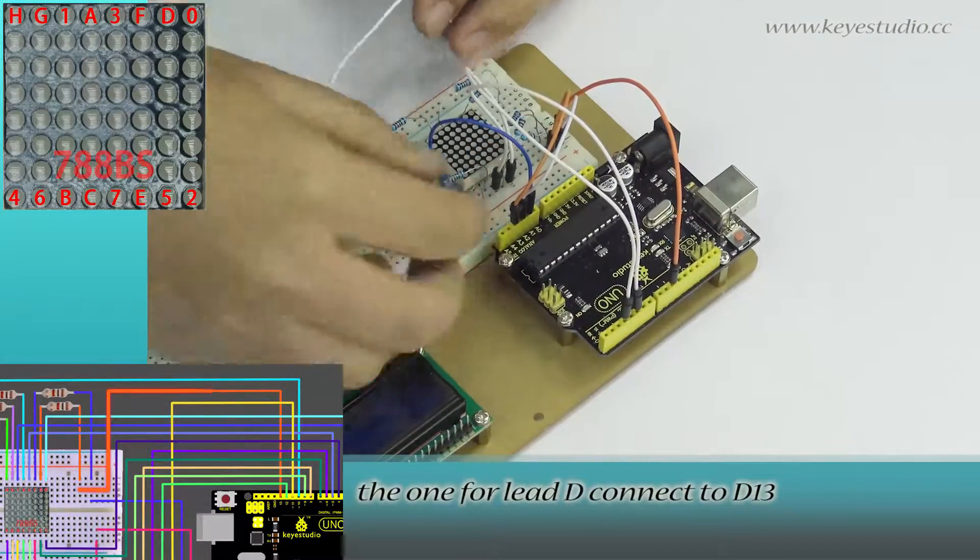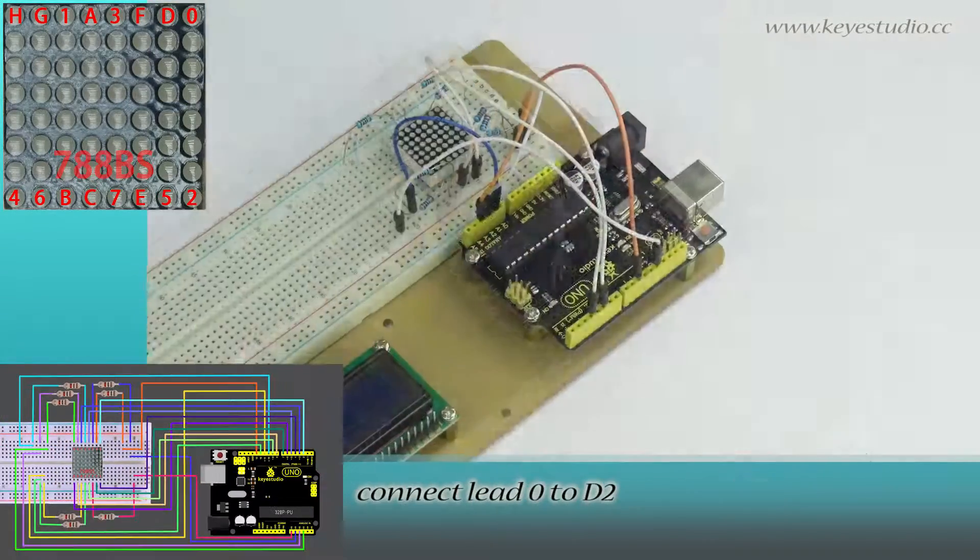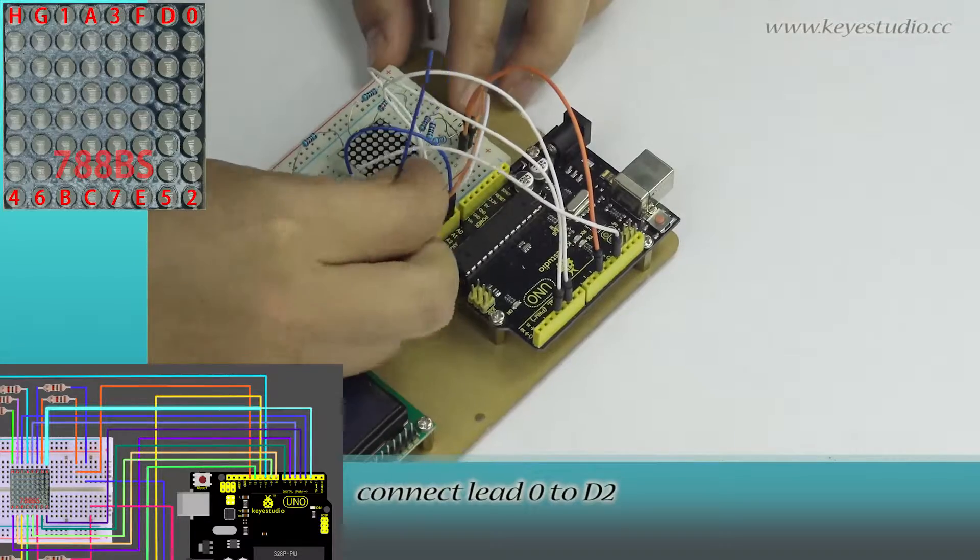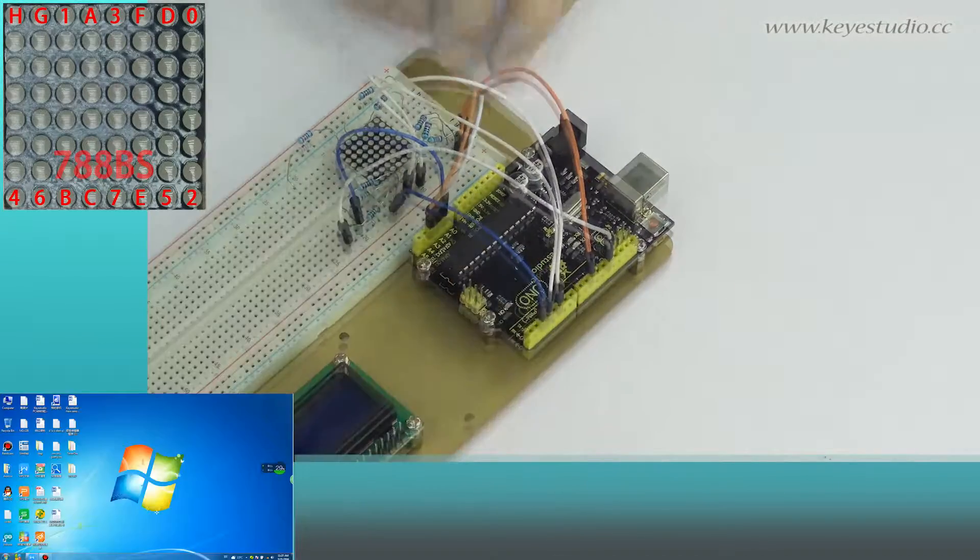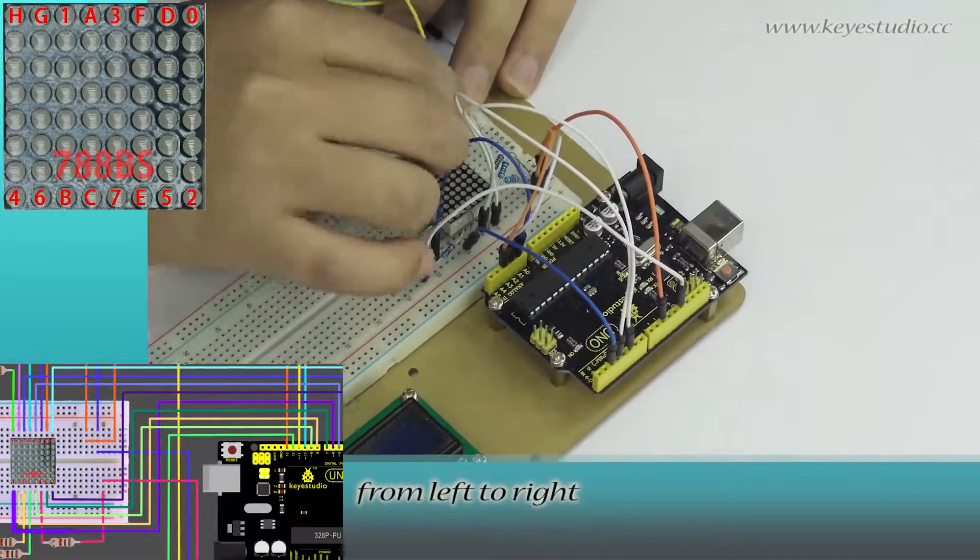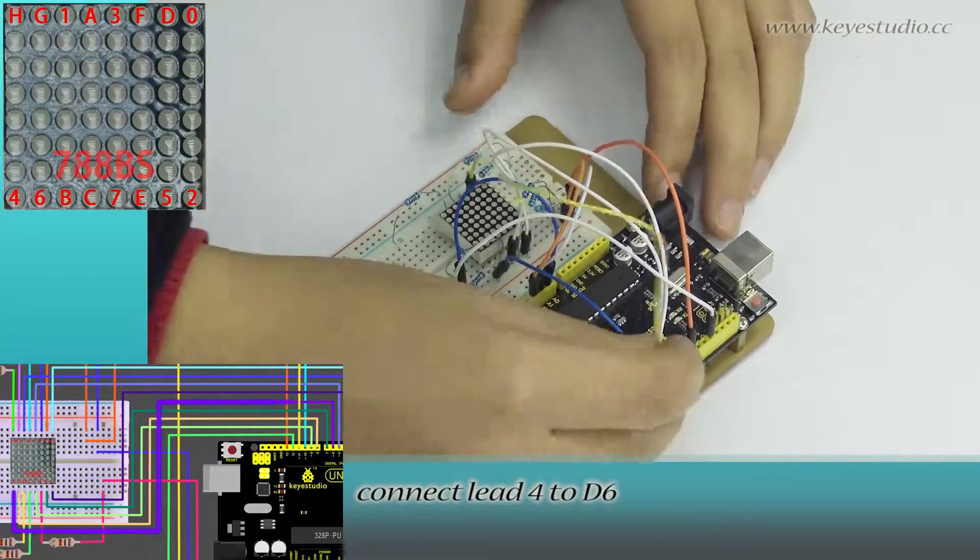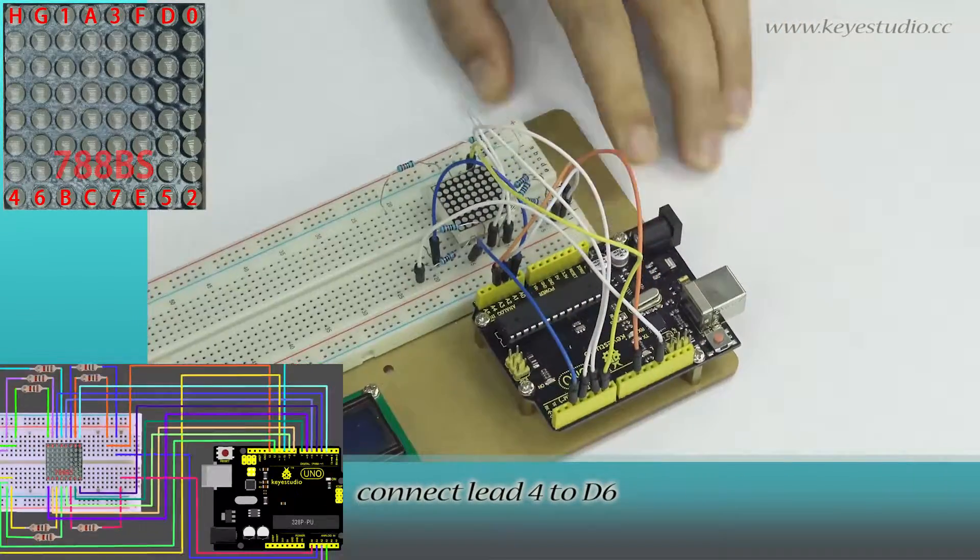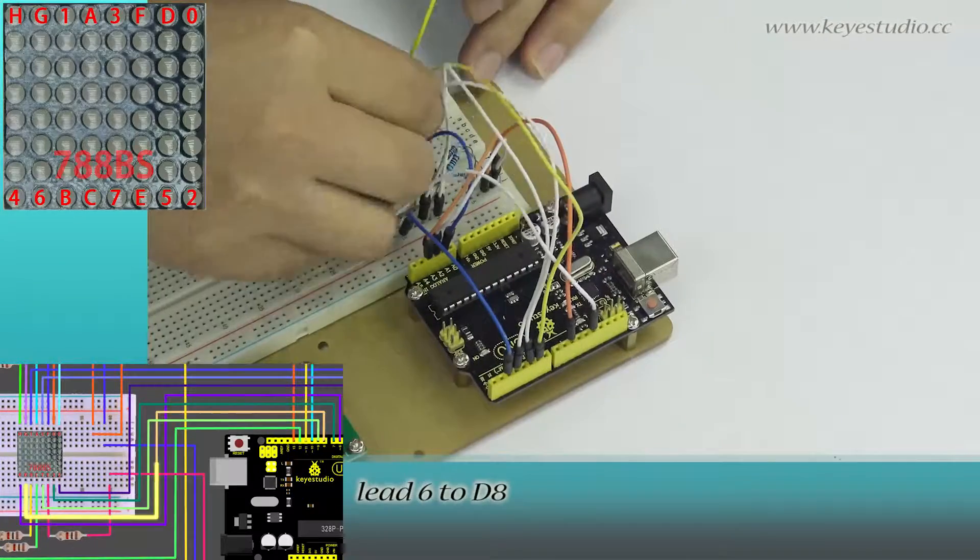Connect lead 0 to D2. For the bottom side from left to right, connect lead 4 to D6, lead 6 to D8.